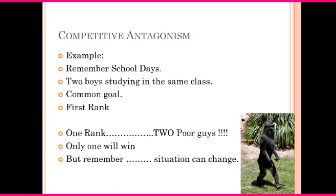Remember those school days when everybody in the class had a dream to excel in academics and to achieve the first rank. Think of two boys who are extremely studious, highly academically oriented, and both want to excel — they have a common goal of achieving the first rank. For competition to exist, you should have a common goal. A person who wants to excel in sports cannot compete with a person wanting to excel in academics — a common end point must be there.